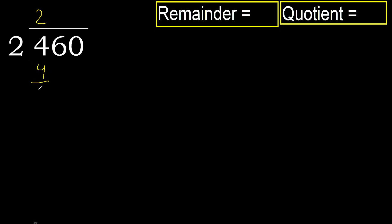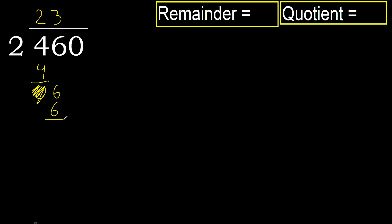subtract 0, next. Eliminate 0 on this side. 6. 2 multiplied by 3 is 6. 6 is not greater. OK, subtract 0, next.